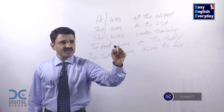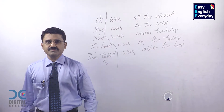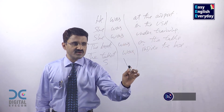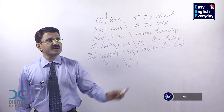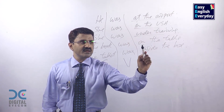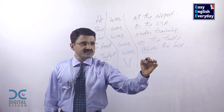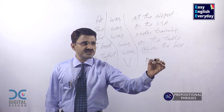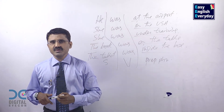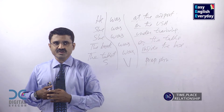He, she, she, the book, the tablet — this is called the subject. Was, was, was, was, was — this is called the verb. 'At the airport', 'in the USA', 'under training', 'on the table', 'inside the box' — this is called a prepositional phrase. A preposition is a word which indicates time, place, or relationship.